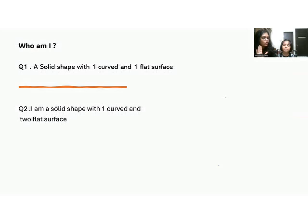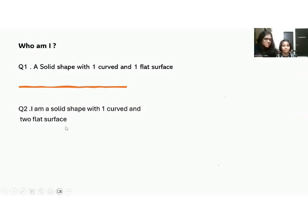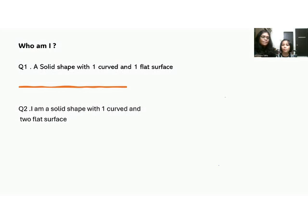Now it's question time. I am giving you a question and you have to identify the shape — who am I? The shape is telling you: I am a solid shape with one curved surface and one flat surface. Who am I? A cone.